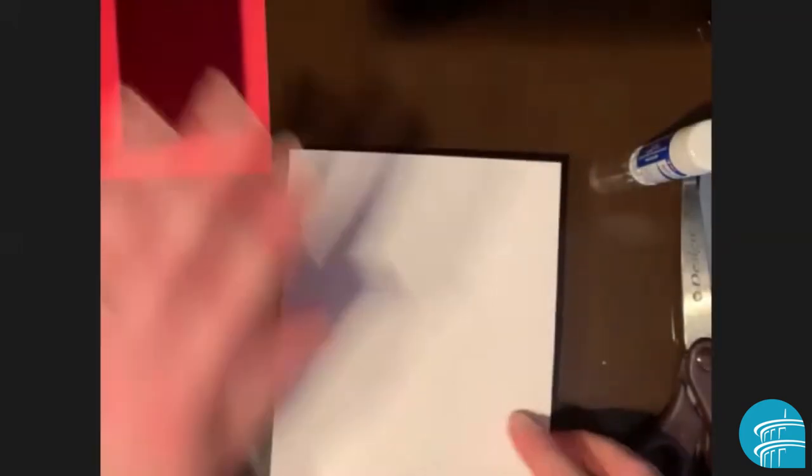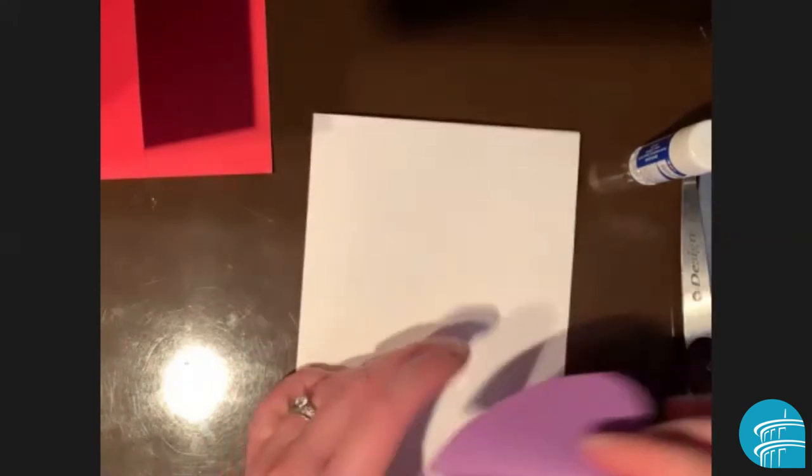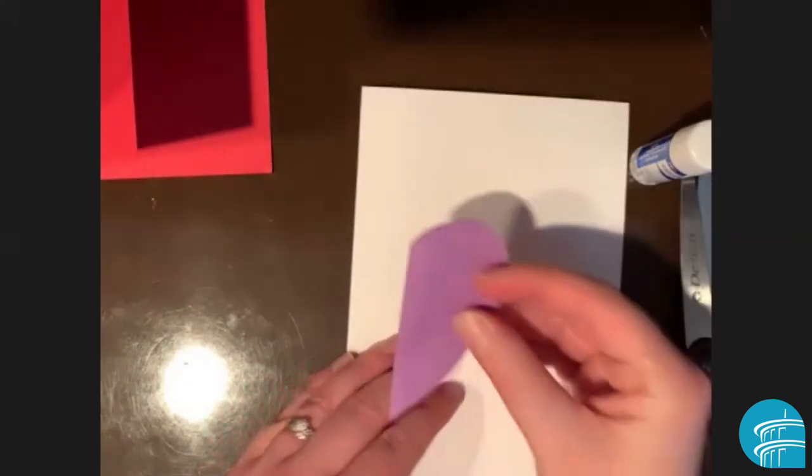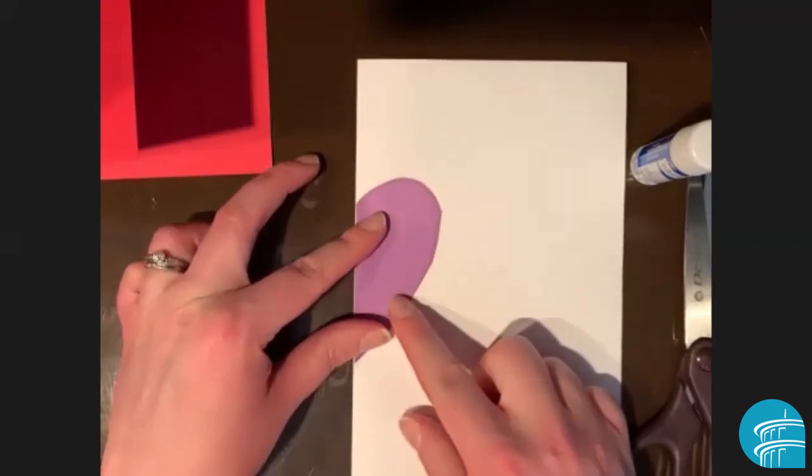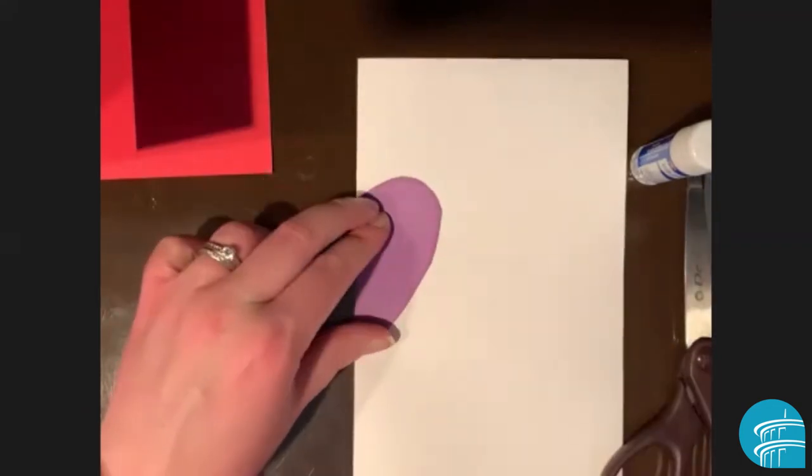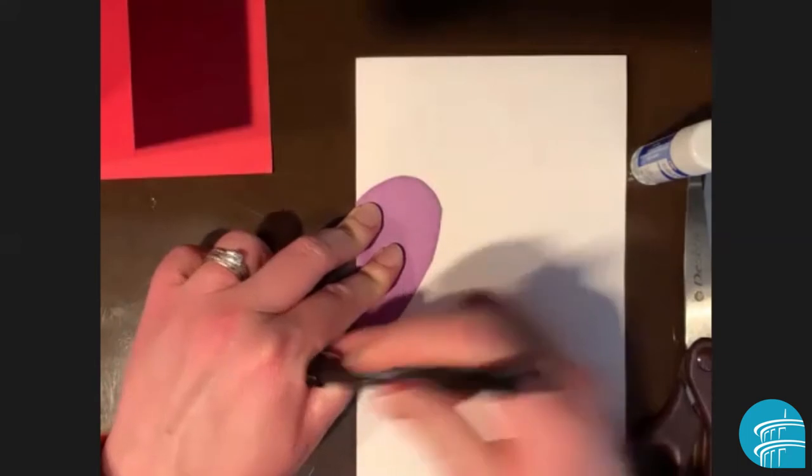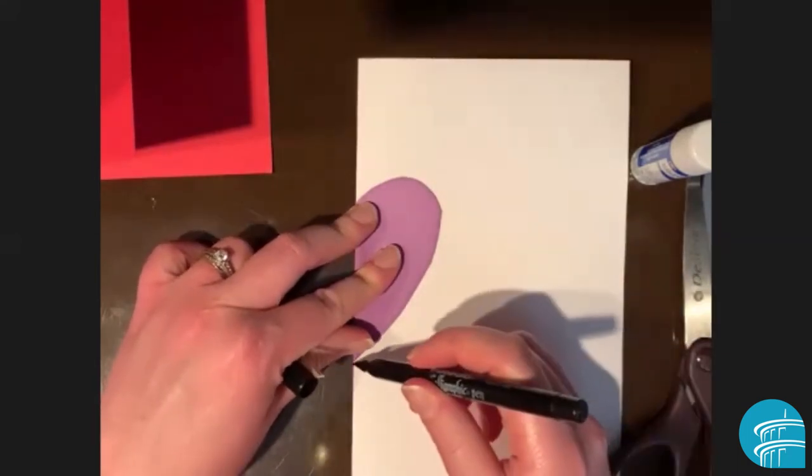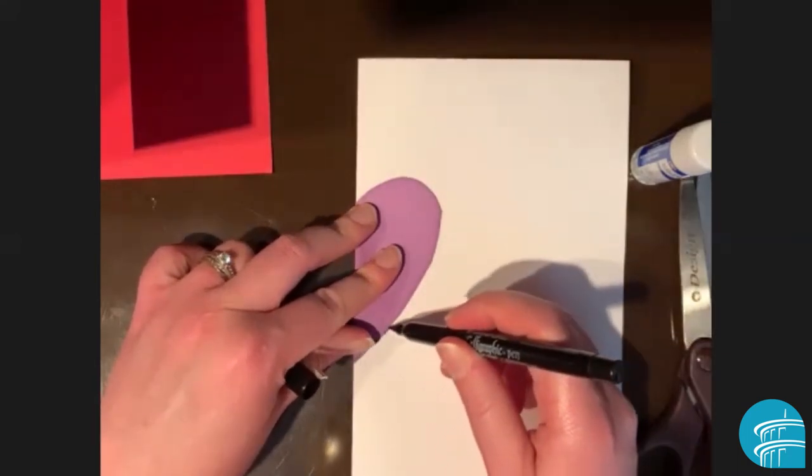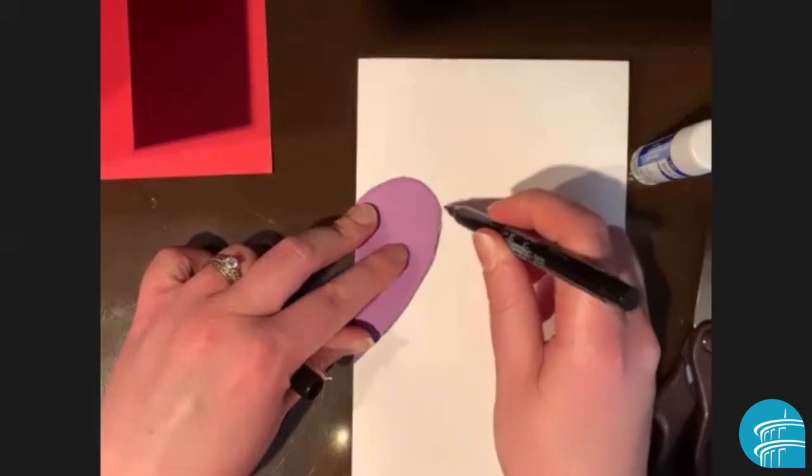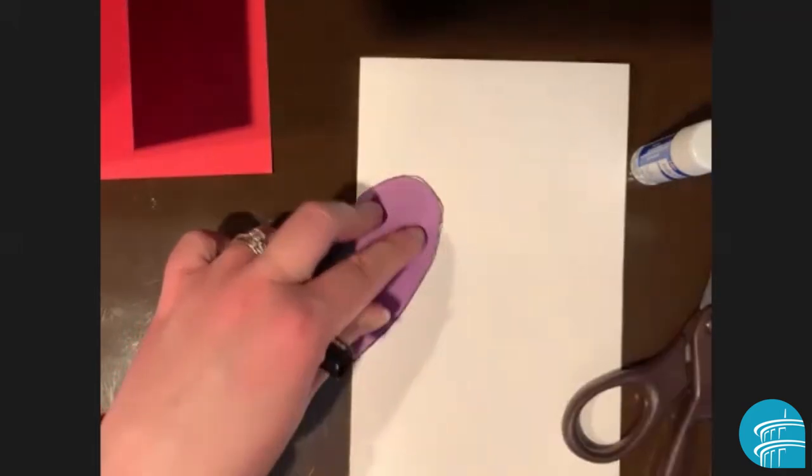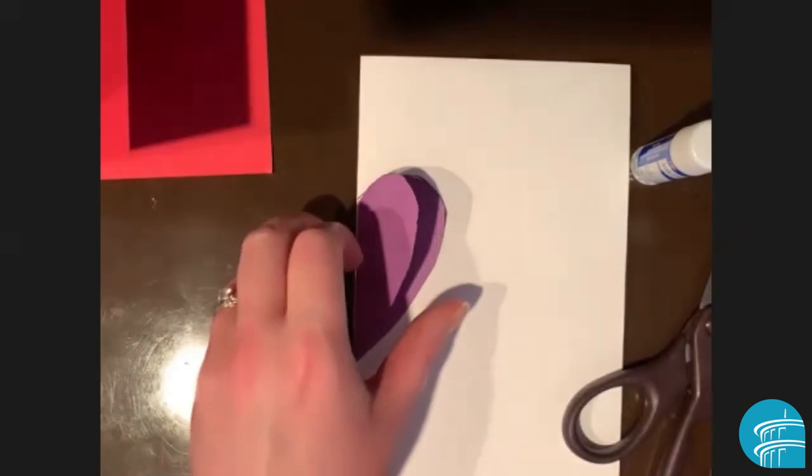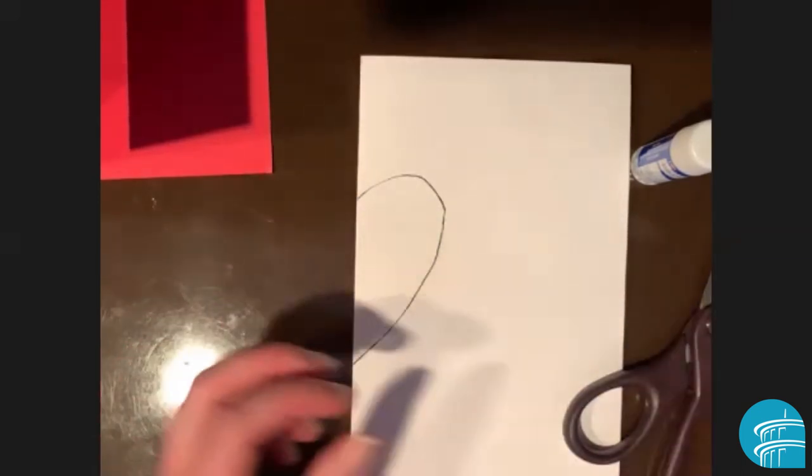But for the pop out, we're just going to use this white piece of paper. I need my heart again. I'm going to fold it back in half. I'm going to try to put it right in the center of that fold right there. I'm going to use my marker. I can use a pen or a pencil as well. I'm just going to trace the outside of that heart like so. And if you mess up a little, don't worry. That's going to be on the inside of the card. No one will see it.